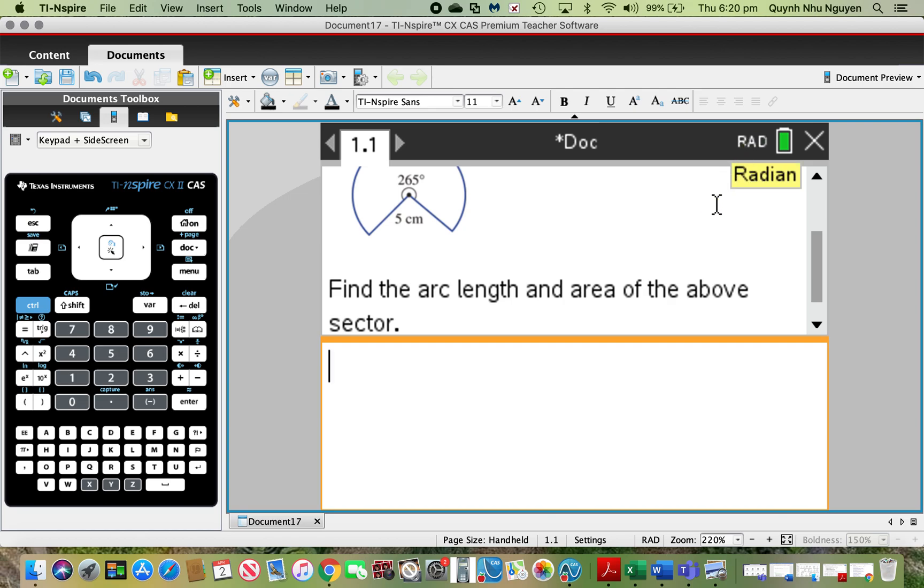Sometimes your calculator is in radian mode as RAD and this is a mode you don't want to use. To change radian back to degrees, simply use your cursor and click on it and it will change it to degrees.